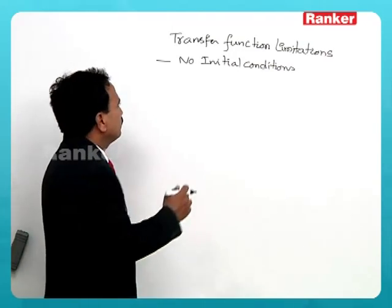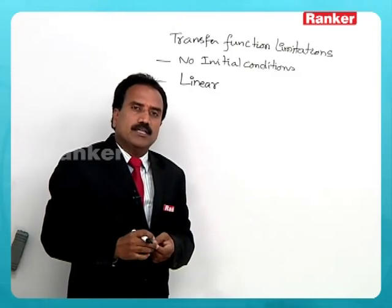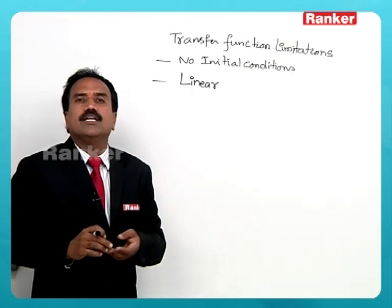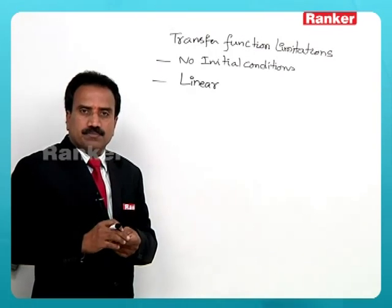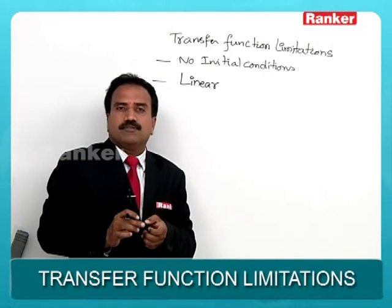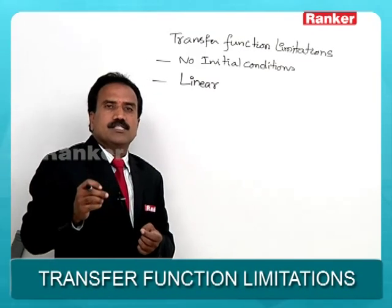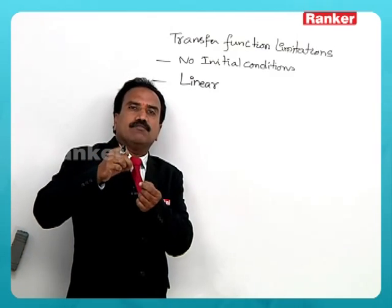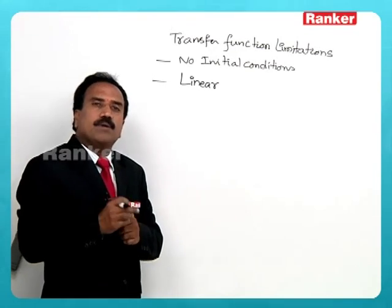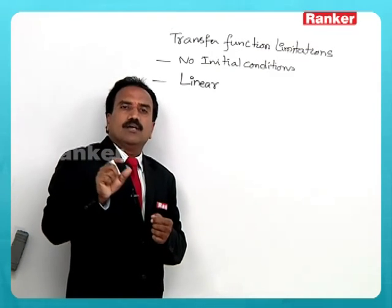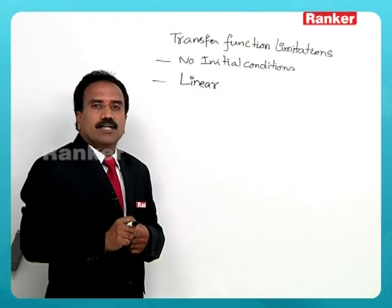Another limitation is that transfer function can be applied only to linear systems, but almost all practical systems are non-linear. A linear system must obey the law of superposition and homogeneity. It is justified, however, because if you take some portion of a non-linear graph it looks almost linear. The control of any parameter occurs only over a portion of the non-linear curve, so applying transfer function to non-linear systems is justified.